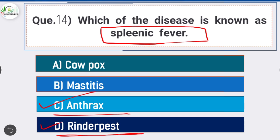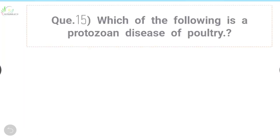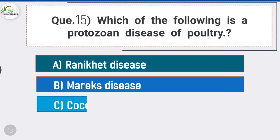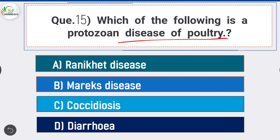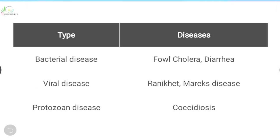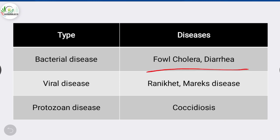Question number fifteen: which of the following is a protozoal disease of poultry? The answer is option C - coccidiosis. Bacterial diseases of poultry include fowl cholera and pullorum disease. Viral diseases include Ranikhet and Marek's disease. The protozoal disease is coccidiosis.